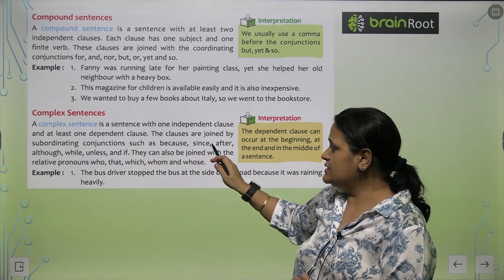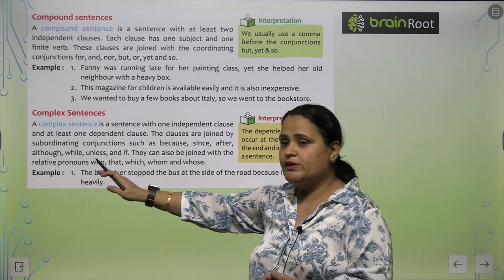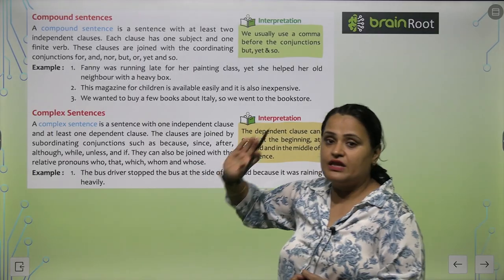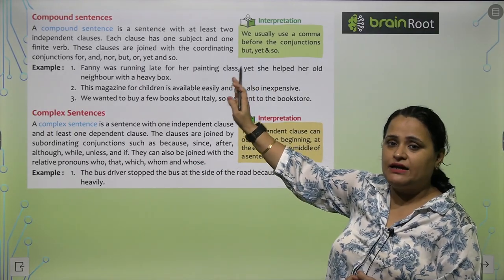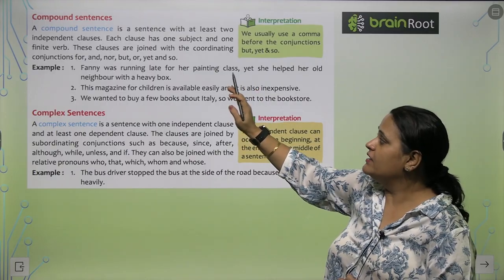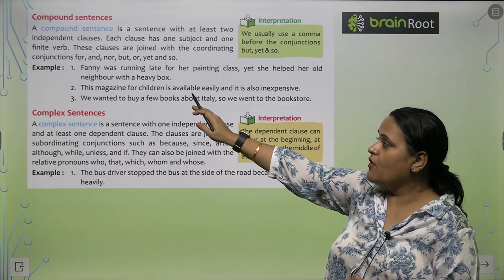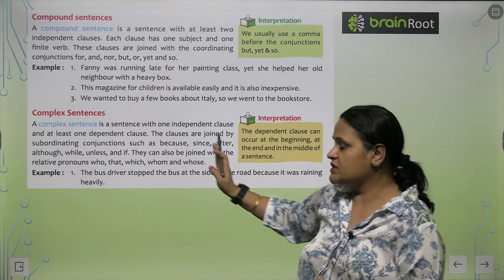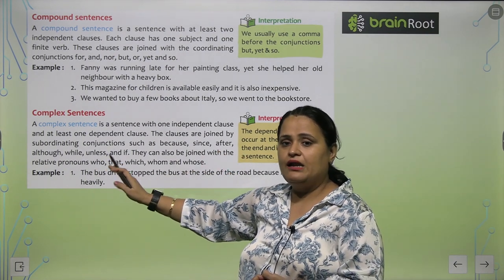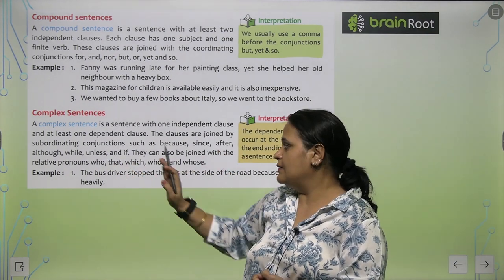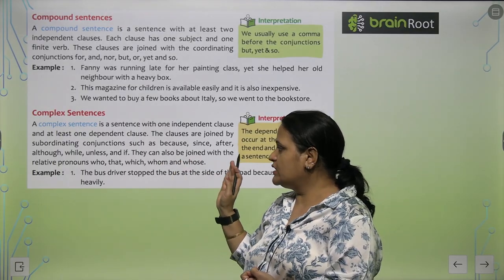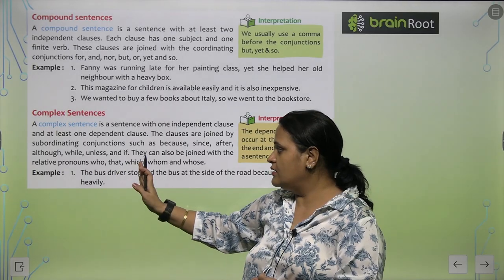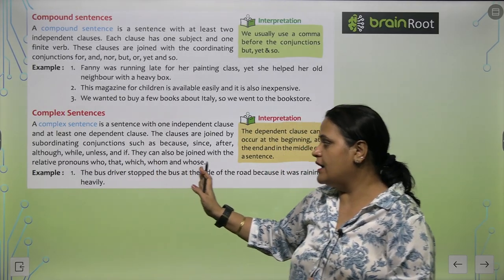Subordinating conjunctions used in complex sentences include: because, since, after, although, while, unless, and if. Additionally, coordinating conjunctions like so, but, or, and, yet, for, and nor may appear. They can also be joined with relative pronouns: who, that, which, whom, and whose.